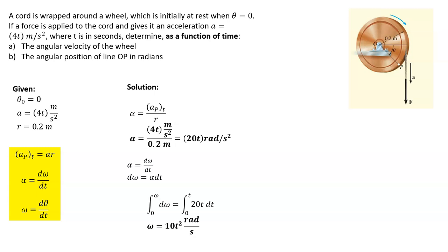So now we have to now find a function for our angular position, which means we're going to use this last equation. So dθ/dt is equal to omega, which we know we just solved as 10t² radians per second.